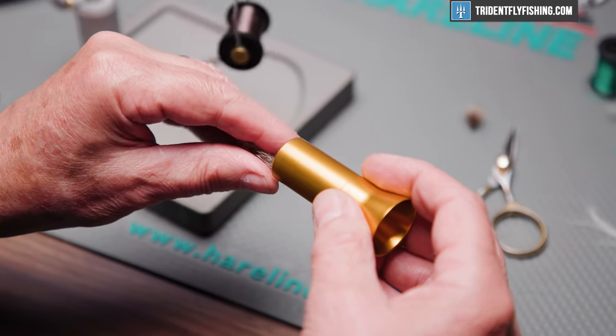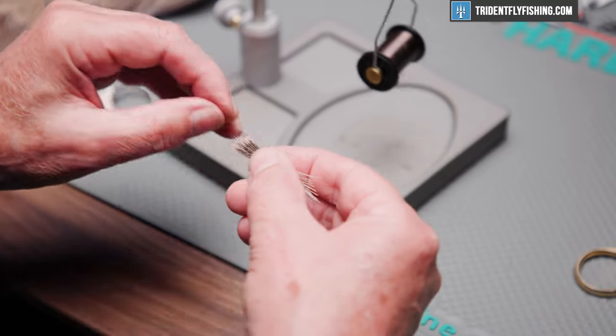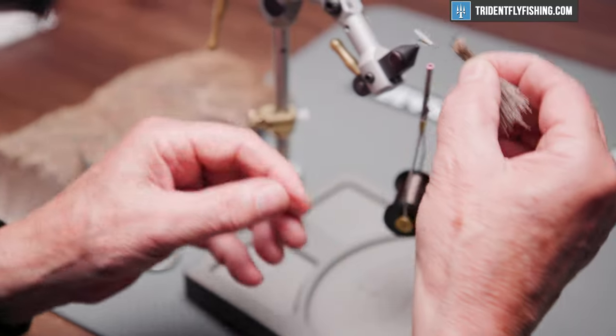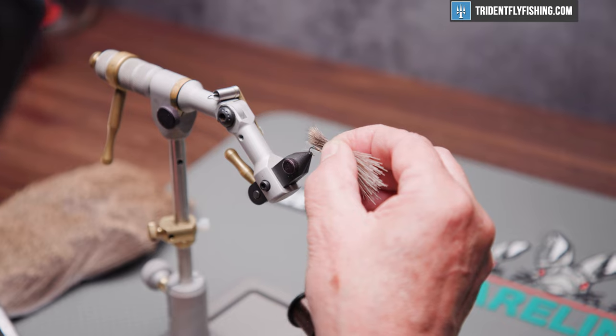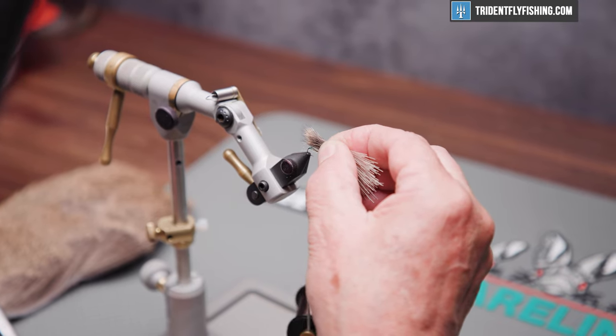Seems to help, though, if I use a bigger stacker. So once we've got our clump established here, we're going to measure this out against the hook. And we want it to be about the same length as our underwing, maybe a tad longer.